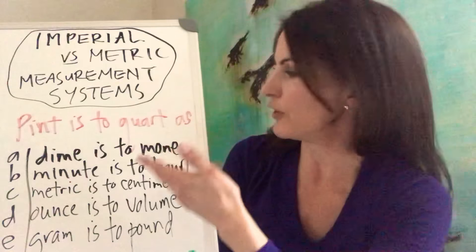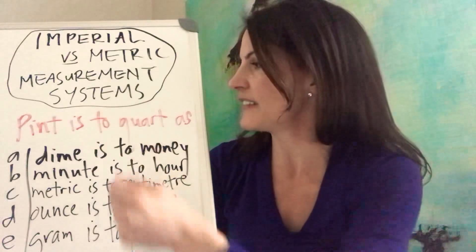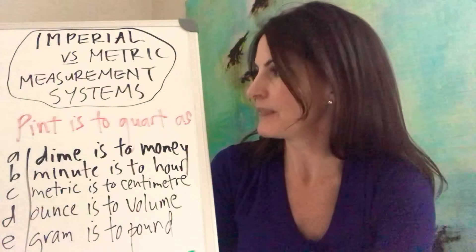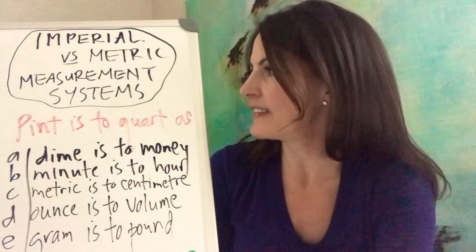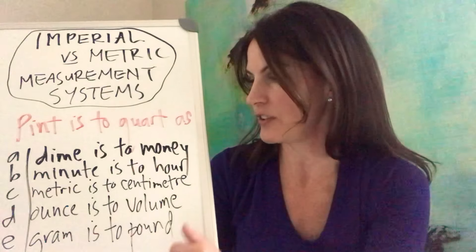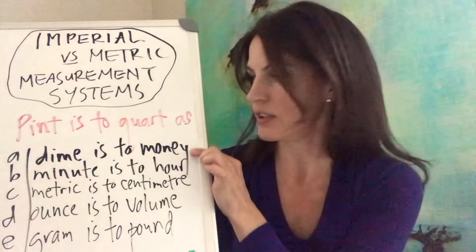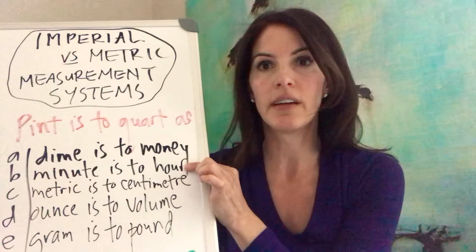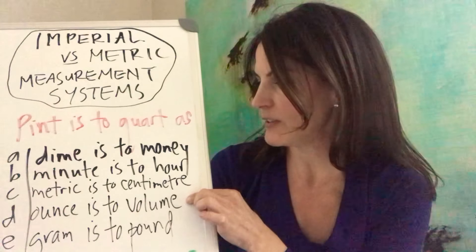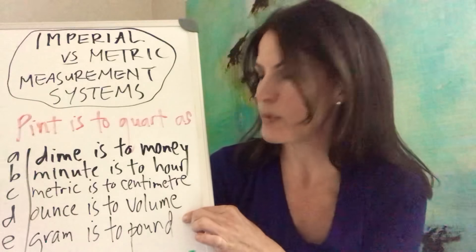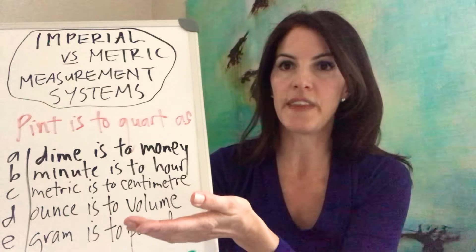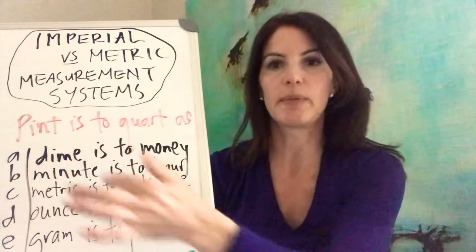For example, in this verbal analogy puzzle, the stem sentence says: pint is to quart. A pint and a quart are both units of measurement for volume in imperial. I'm going to make my relationship sentence: a pint is smaller than a quart. Let's try that relationship sentence with all five answer options. A dime is smaller than a money — doesn't work. A minute is smaller than an hour — that does work. Metric is smaller than a centimeter — nope. Ounce is smaller than a volume — nope. Gram is smaller than a pound — nope. You can see how they've intermixed metric and imperial within the answers. I'm going to choose B because the relationships fit together perfectly.